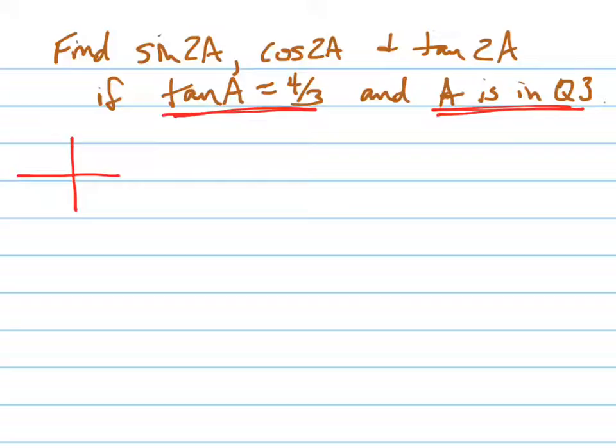A is in the third quadrant, means that here it is right here, here's the angle A, that whole degree is A degrees. And that means tangent, which means the opposite, 4 is the opposite, but it's not 4, it's negative 4. And the adjacent is not 3, it's negative 3. And so this is a 3, 4, 5 triangle.